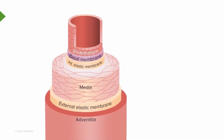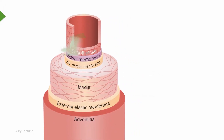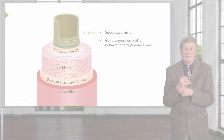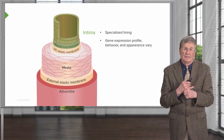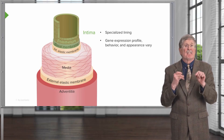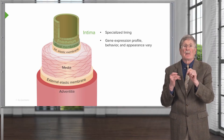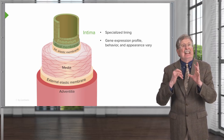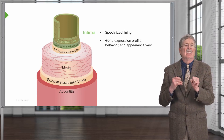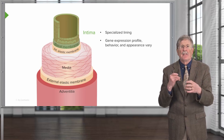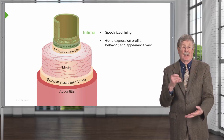Let's get a little more intimate with the intima. It's the specialized lining for all blood vessels. The gene expression profile, the behavior, and the appearance of the intima vary greatly depending on where you are in the vascular tree. If you are in the aorta, it can be quite different than if you are in the capillaries. Endothelial expression and behavior vary depending on where you are.